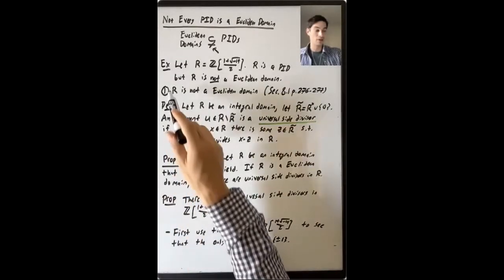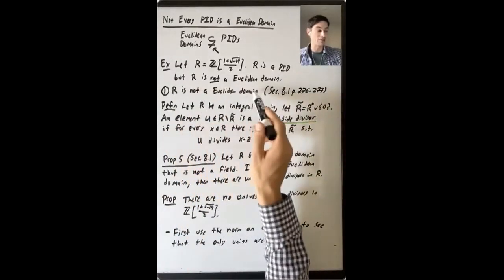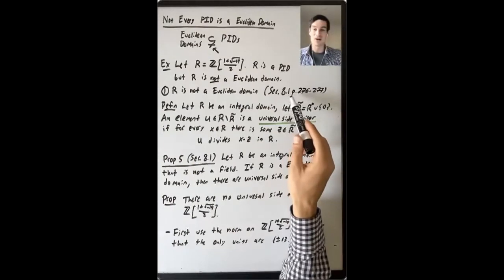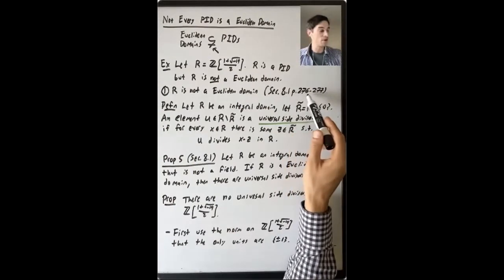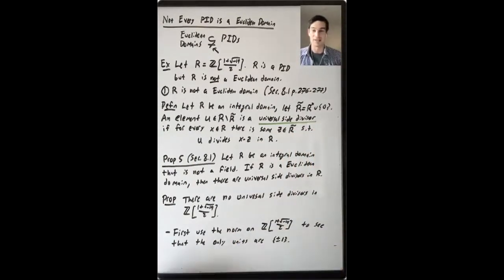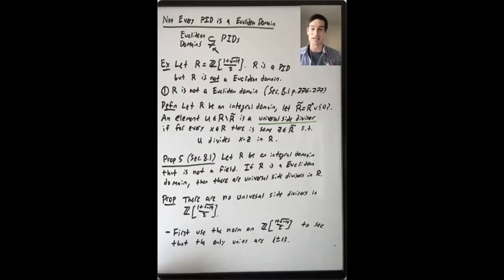We'll see this in two parts. First, we'll see that it's not a Euclidean domain. That is dealt with at the very end of section 8.1 of Dummit and Foote, pages 276 to 277. And this uses the concept of what's called a universal side divisor.